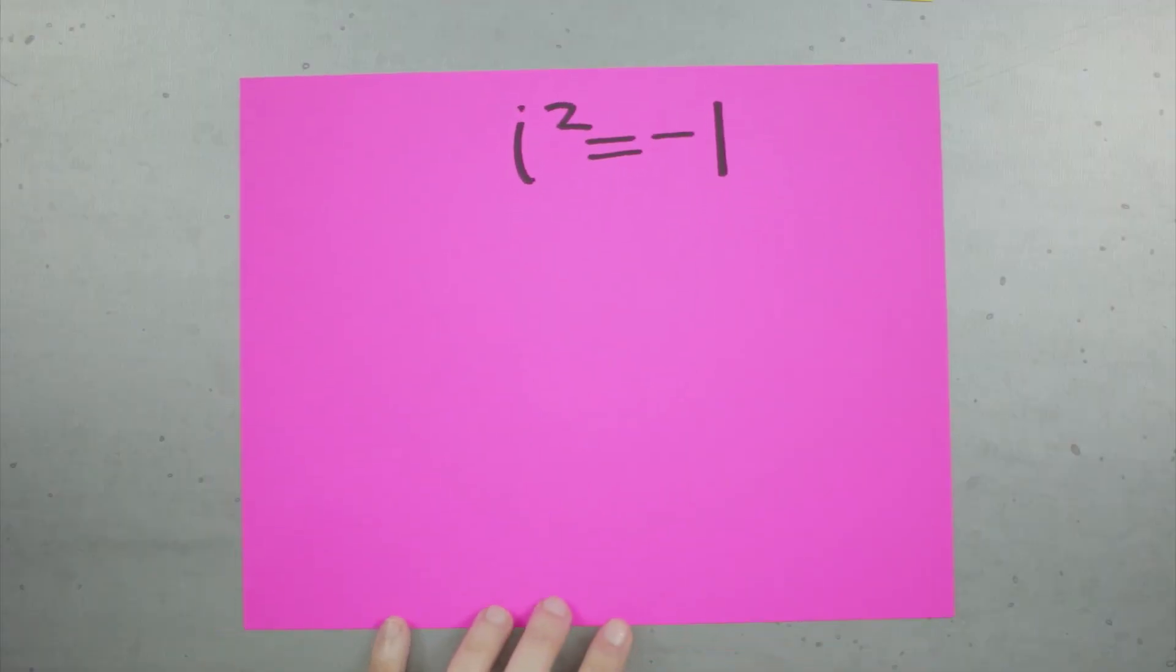So what's i exactly? Well, i is defined as the square root of negative 1, such that when you multiply i by itself, you get negative 1.